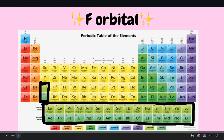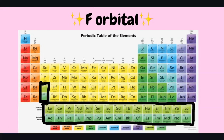Last but not least, we have the F orbital. The F orbital consists of the lanthanide and actinide elements, which are also known as the rare earth elements. Most of the elements in this category are very radioactive and are produced synthetically in a lab, which means that they are not found in nature.